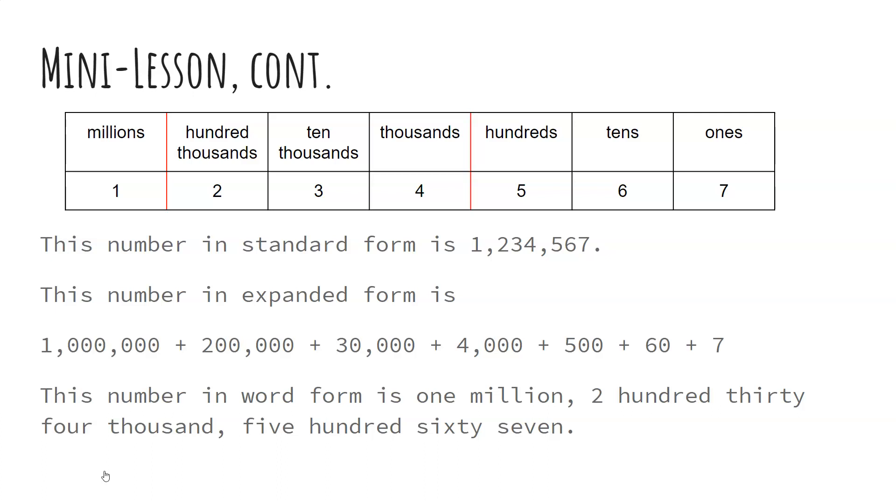A 5 in the 100s for 500, 6 in the 10s for 60, and 7 ones.